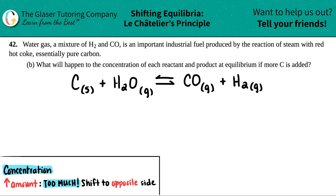Number 42: water gas, a mixture of H2 and CO, is an important industrial fuel produced by the reaction of steam with red hot coke — especially pure carbon. Then we have letter B: what will happen to the concentration of each reactant and product at equilibrium if more C is added?